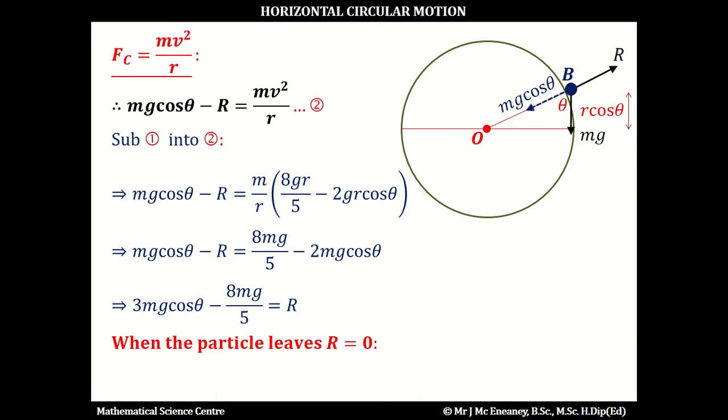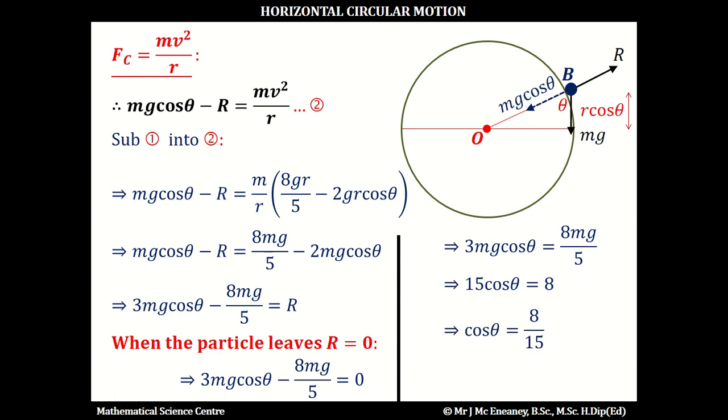When the particle leaves, the normal reaction R is 0. So 3mg cos theta minus 8mg over 5 equals 0, which means 3mg cos theta equals 8mg over 5. The mg's cancel. Bringing the 3 over to multiply with the 5, cos theta equals 8 over 15. However, the height is R times cos theta, so the height is R times 8 over 15, which means H equals 8R over 15.